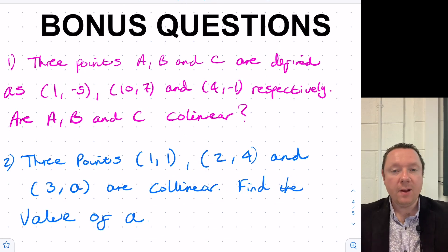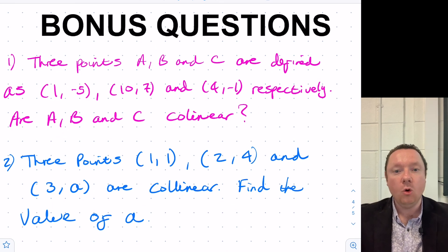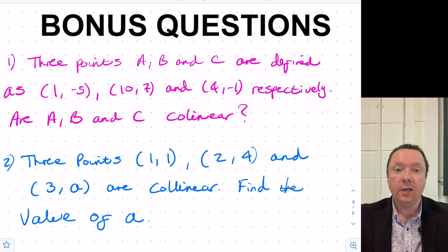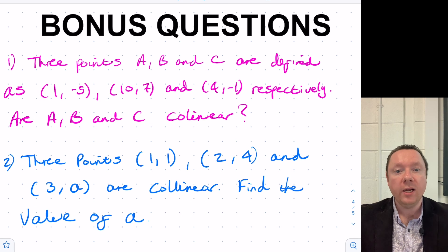This has been ClareMaths. Today we've done a quick review of what it means for three points to be collinear, shown how to prove that three points are collinear, and done some problem solving to find missing values. Try these bonus questions — give them a go. Take care, stay safe and goodbye.